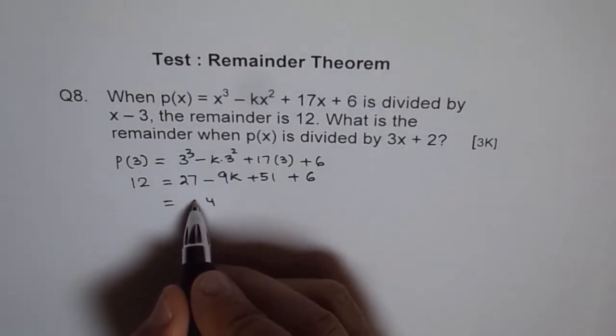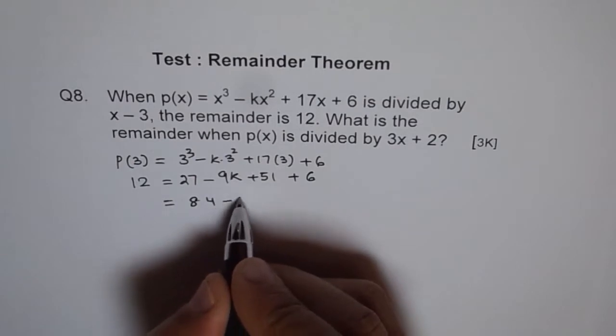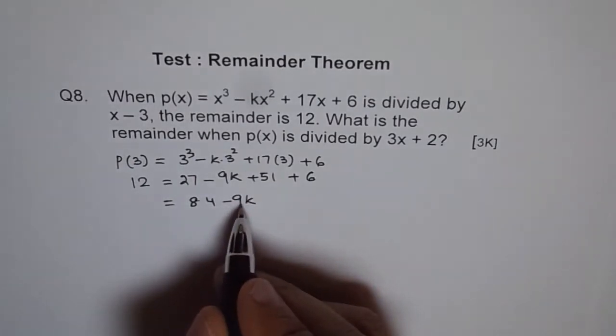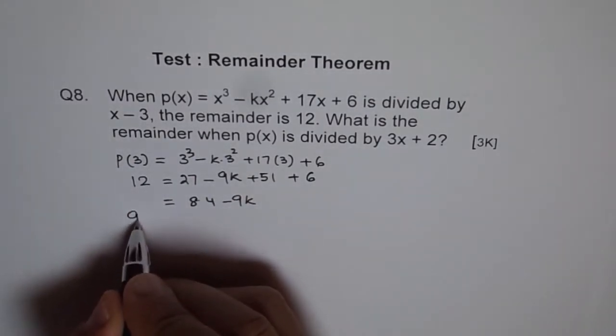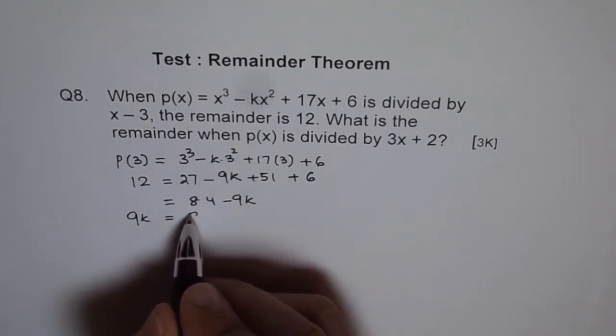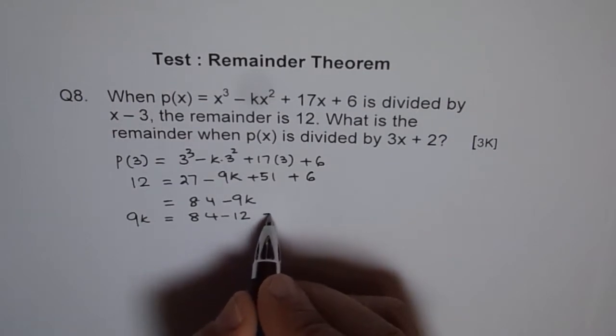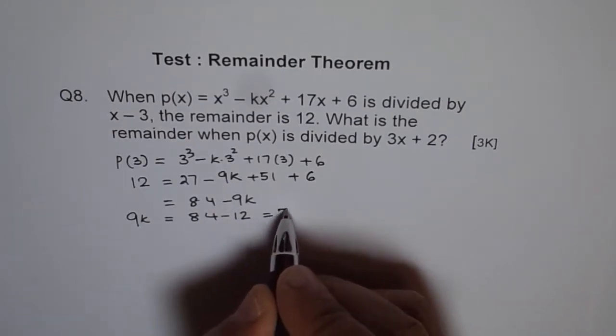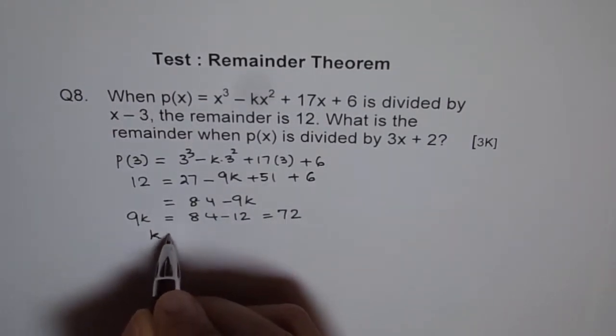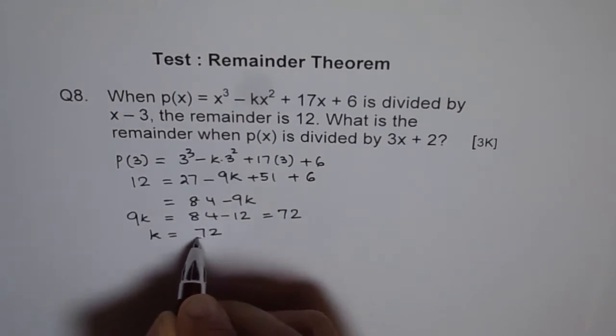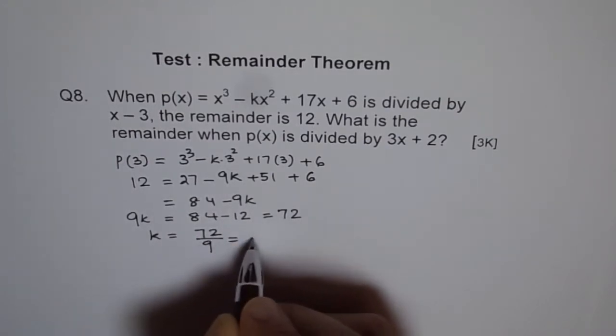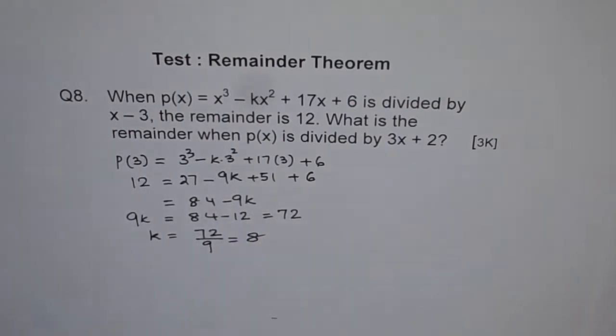So now we can bring 9k here and say 9k is equal to 84 minus 12, which is 72. Therefore k is equal to 72 over 9, which is 8. So we get a value of k as 8 for us.